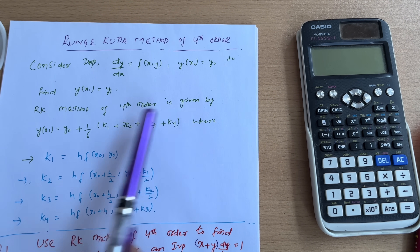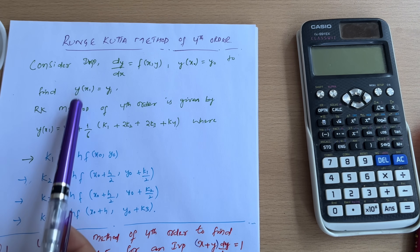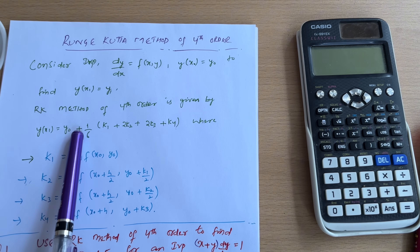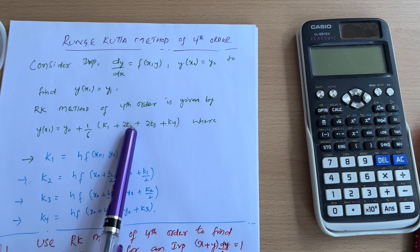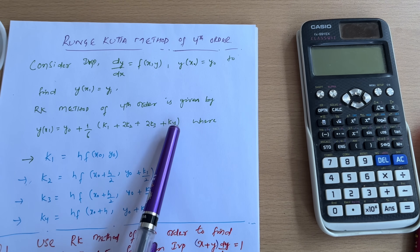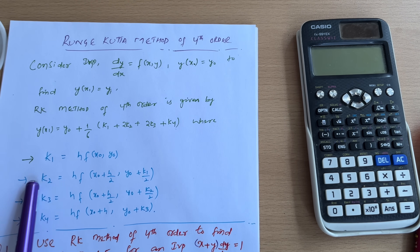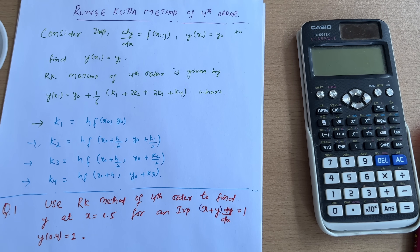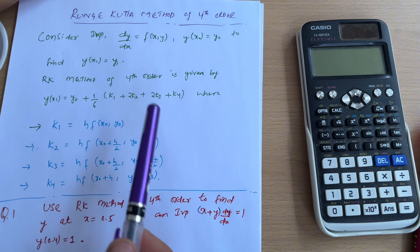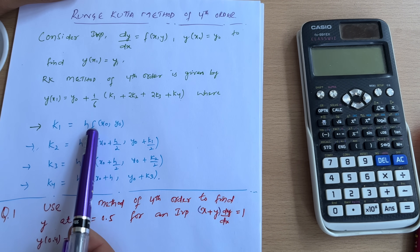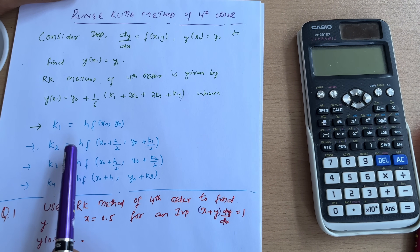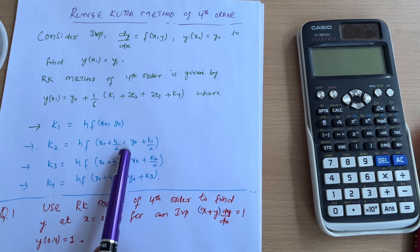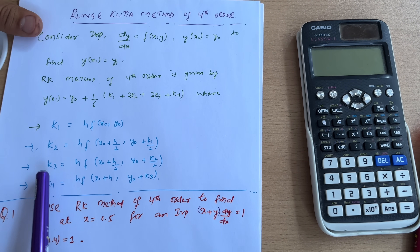The R-K method of fourth order gives y(x1) is equal to y-naught plus (1/6)(k1 plus 2k2 plus 2k3 plus k4), where k1, k2, k3, and k4 are the slopes. k1 is equal to h·f(x-naught, y-naught). k2 is equal to h·f(x-naught + h/2, y-naught + k1/2).